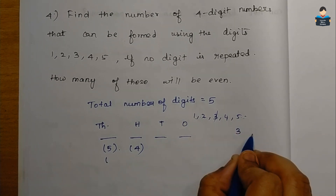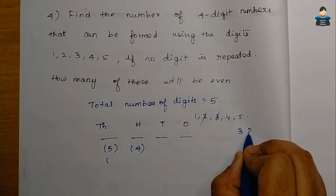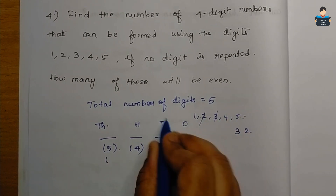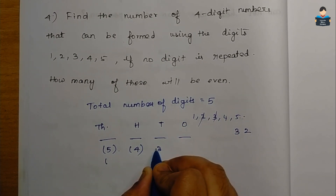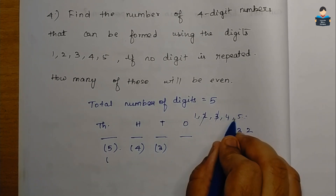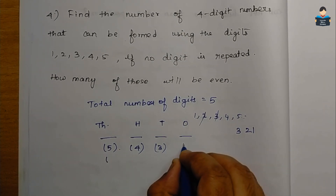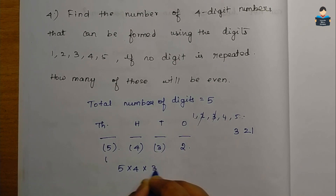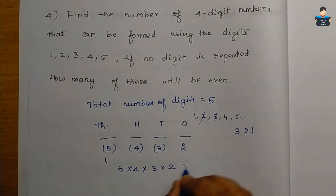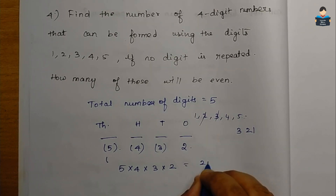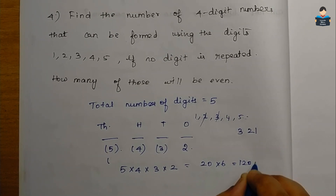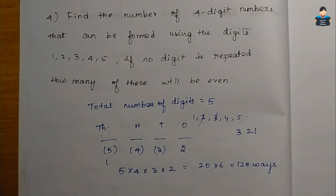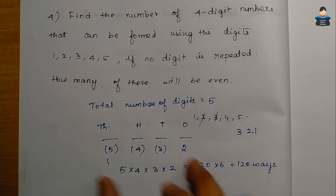Once a digit is used in the 1000s place, for the 100s place we have 4 remaining digits, so 4 ways. For the 10s place, 3 ways, and for the 1s place, 2 ways. So multiplying: 5 × 4 × 3 × 2 = 120. We can form 120 four-digit numbers from the 5 digits.